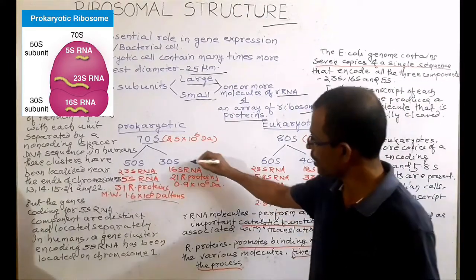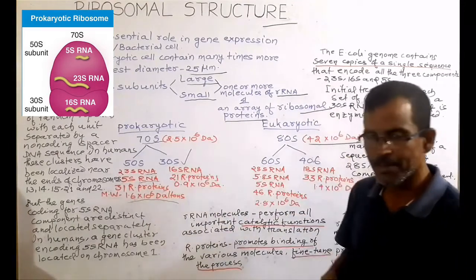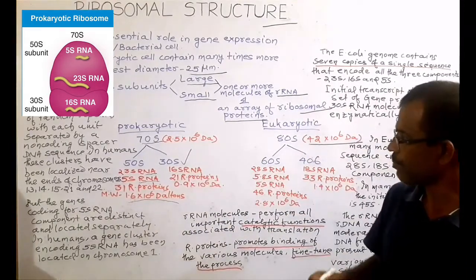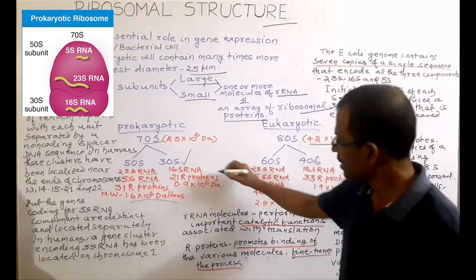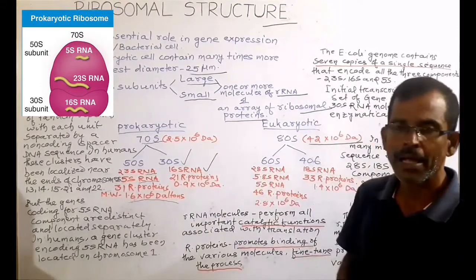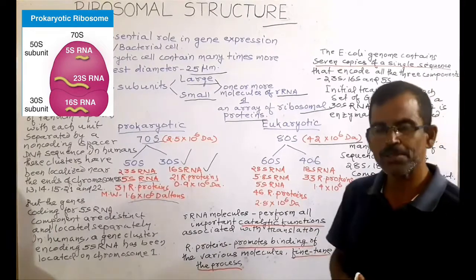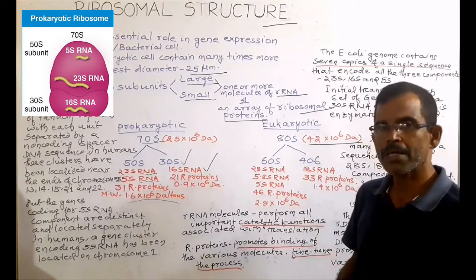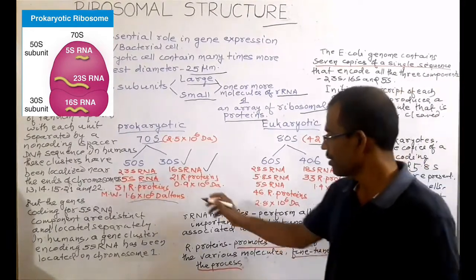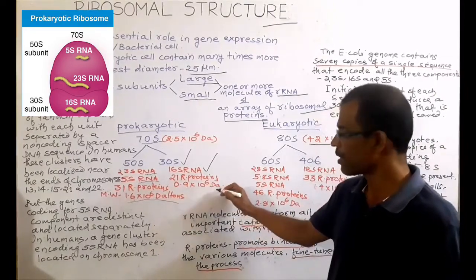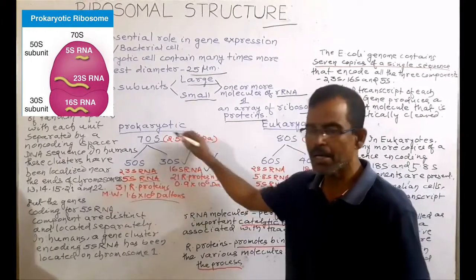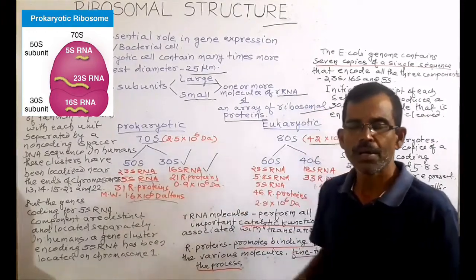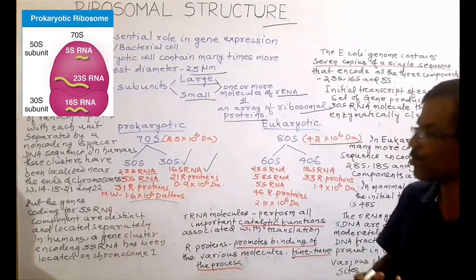In prokaryotic ribosome, the smallest subunit is 30S. This 30S subunit consists of a molecule of 16S RNA and 21 ribosomal proteins. Its approximate molecular weight is 0.9 × 10^6 Dalton. This is about the various components of a prokaryotic ribosome.